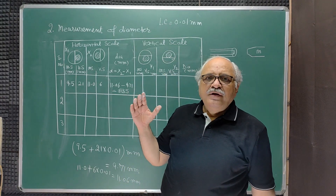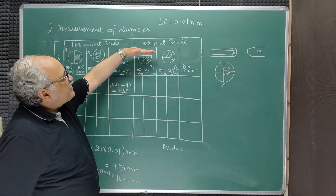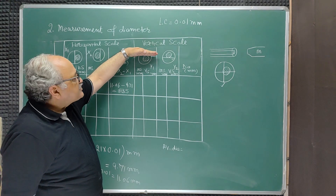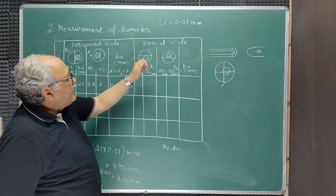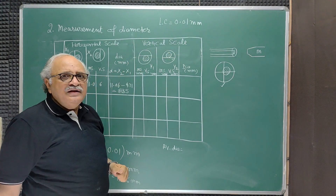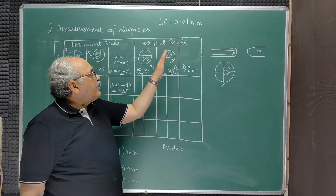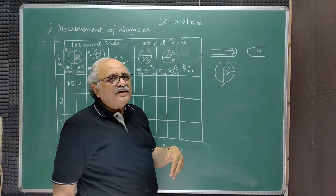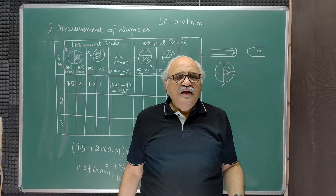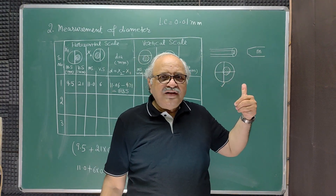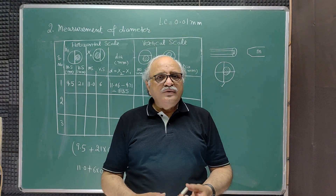In the same way, we record using the vertical scale. On the vertical scale, keep the horizontal wire of the cross wire tangent to one end of the orifice image, record it, and then do the same for the lower side. This way you calculate the diameter recorded by the vertical scale. Take three observations using the horizontal scale and three observations using the vertical scale, then take the average of these diameters to find the final value.